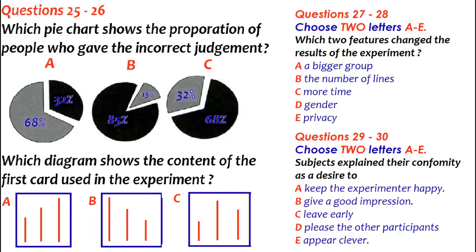The subject would hear the others saying things about the length of the line which were clearly false. Most subjects answered correctly, in spite of the incorrect judgments of the others. But a proportion — 32% — conformed to the majority view, the incorrect view. This proportion was much, much higher than anticipated. Before the experiments, they'd thought 15% or lower might do this.